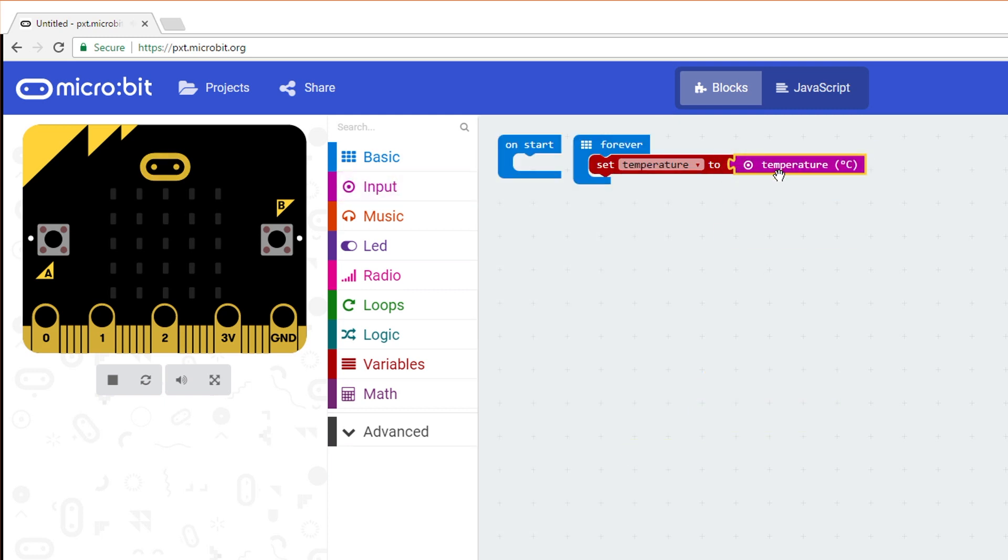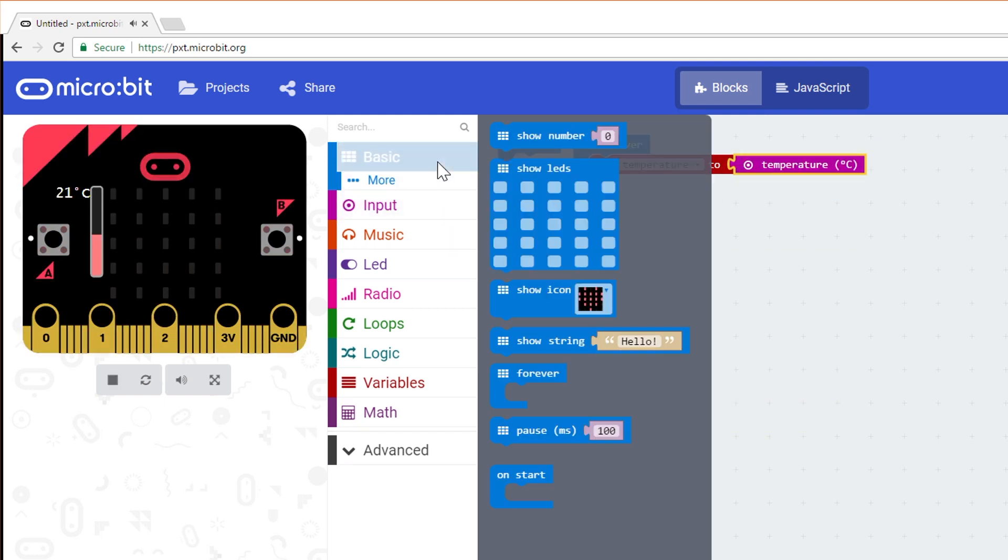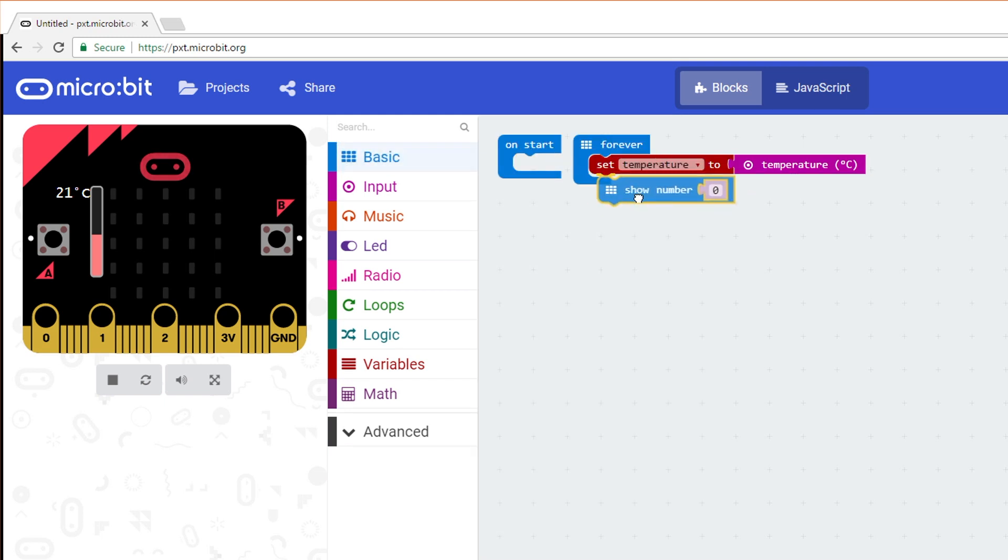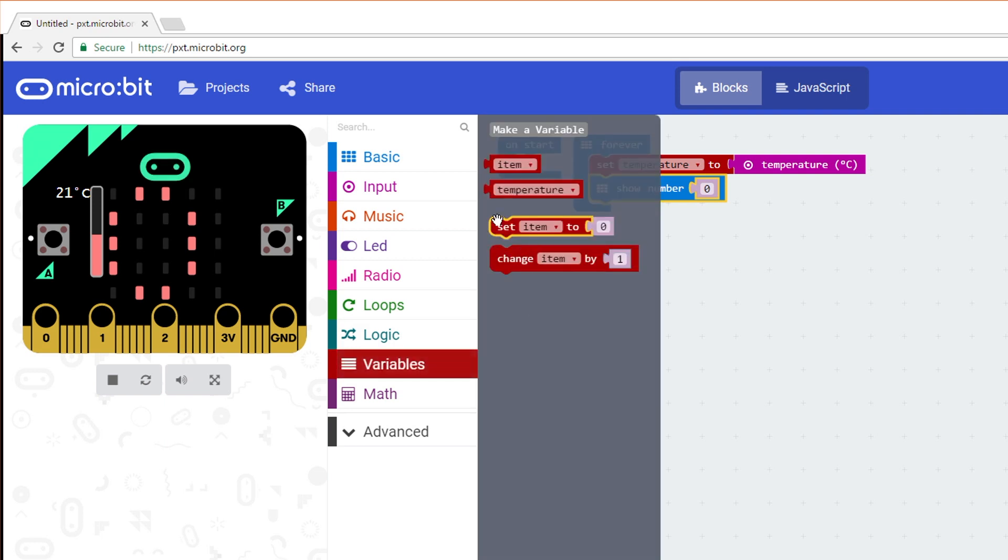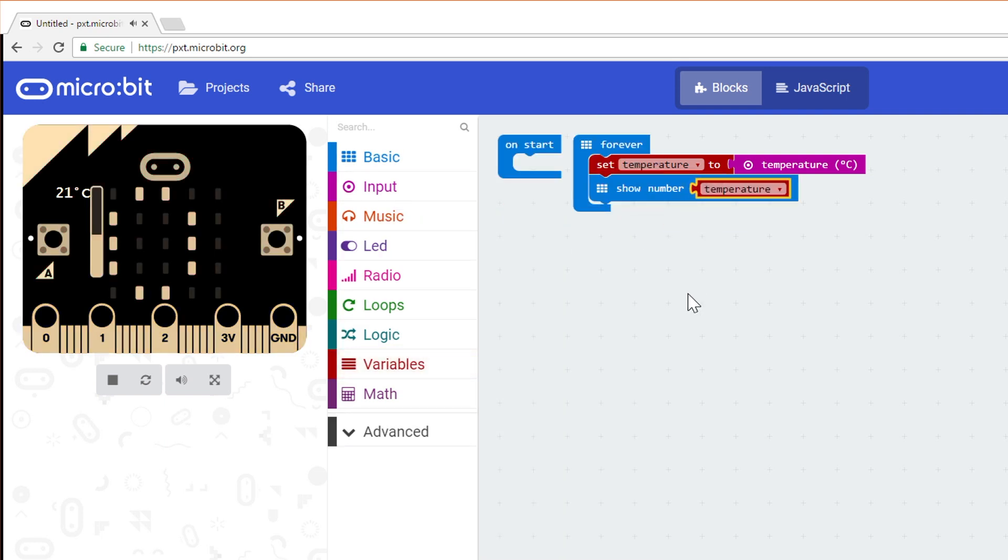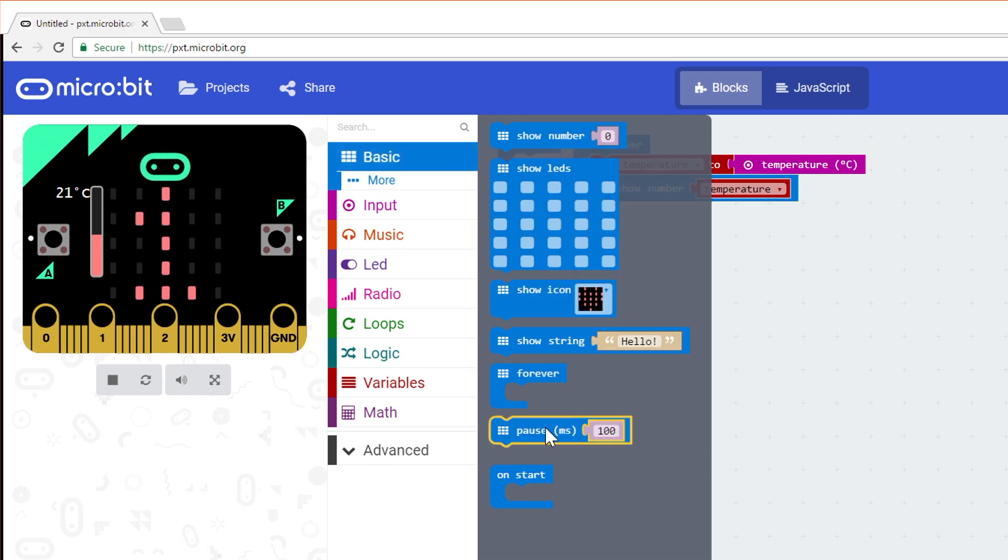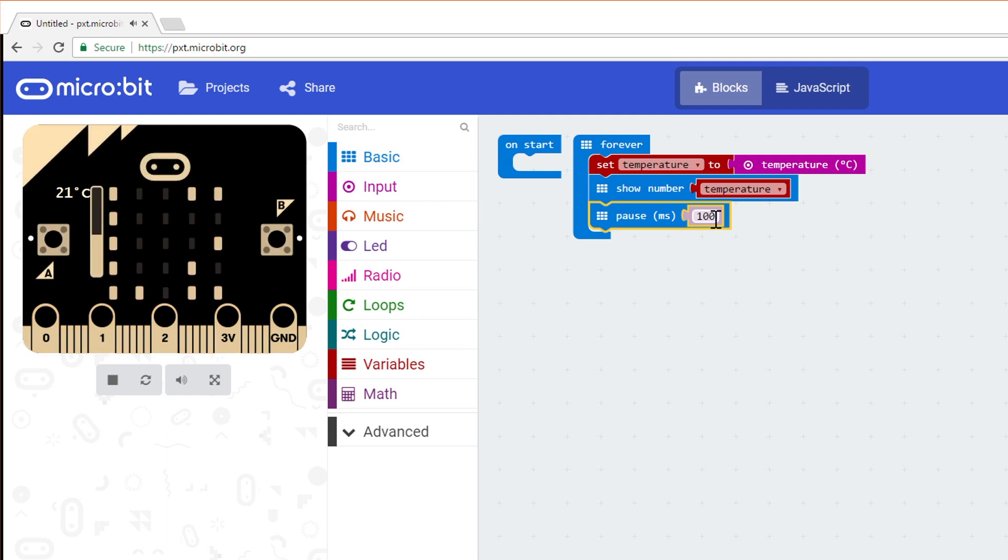Drag Show Number from Basic and attach it just under the Set Variable block. Grab a Temperature Variable block and replace the default 0 in Show Number. This scrolls the number stored inside the temperature variable across the display. In Basic, snap a Pause block under Show Number. Change 100 to 1000. We want some kind of delay before the temperature scrolls again, otherwise you'll get an endless string of numbers with no space in between them.